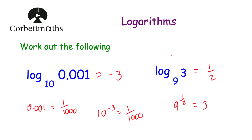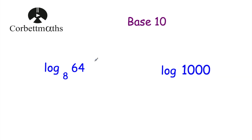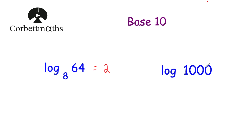One more thing to cover in this video is base 10. Sometimes you may encounter logs like log of 1,000 where there's no base mentioned. If no base is mentioned, the base will be 10. So log of 1,000 really means log to base 10 of 1,000, and the answer would be 3 because 10 cubed is equal to 1,000.